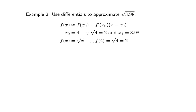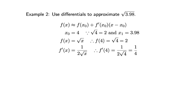f(x) = √x, replacing 3.98 with x. Therefore f(4) = √4 = 2, and f'(4) = 1 / (2·√4) = 1/4.